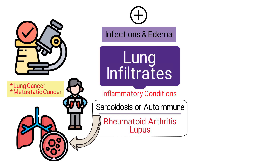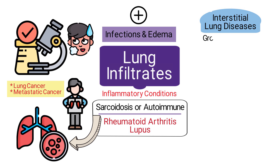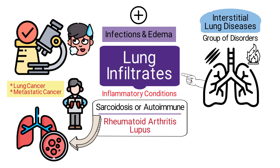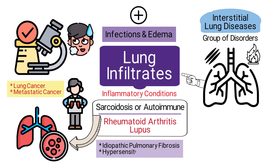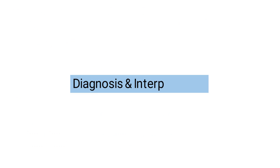Interstitial lung diseases — a group of disorders characterized by scarring and inflammation of the lung tissue — can also show up as infiltrates. These conditions, which include idiopathic pulmonary fibrosis and hypersensitivity pneumonitis, typically present with a pattern of infiltrates that can be identified on a CT scan.